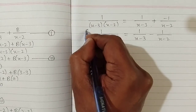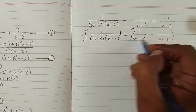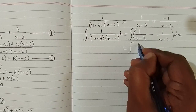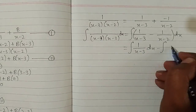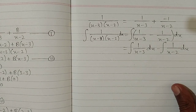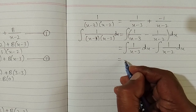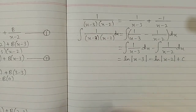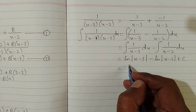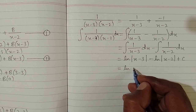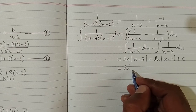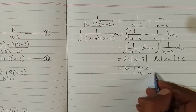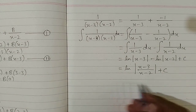Now we integrate both sides with respect to x. We apply the integral to both fractions: the integral of 1 upon (x minus 3) minus the integral of 1 upon (x minus 2). The integral of 1 upon (x minus 3) is ln|x minus 3|, minus ln|x minus 2|, plus c, where c is the constant of integration. Applying the log rule that the difference of logs equals the log of a quotient, we get ln of (x minus 3) upon (x minus 2) plus c. This is the required answer.